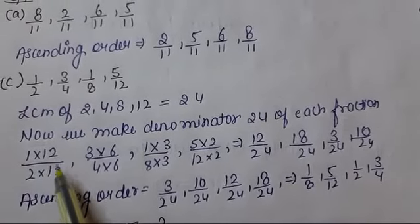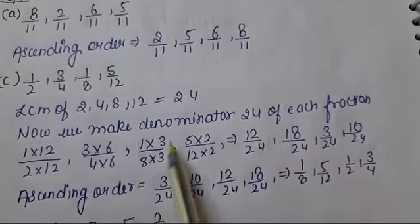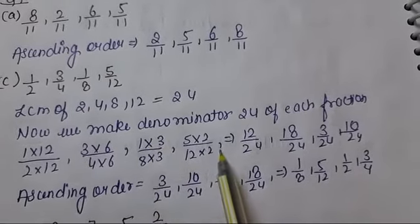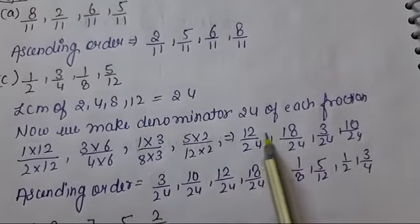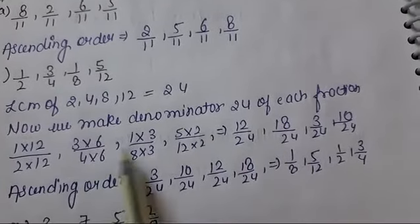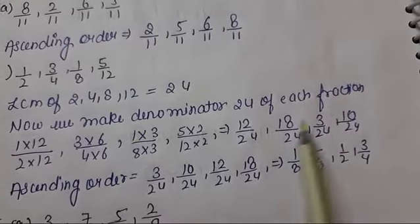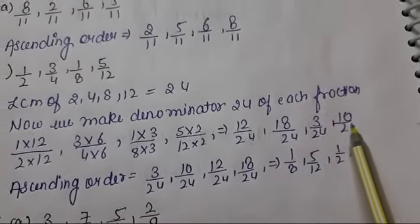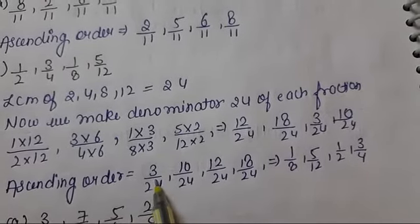For 1 upon 2, multiply by 12, so 1 also multiplies by 12. For 4, multiply by 6, so 3 also multiplies by 6. For 8, multiply by 3, so 1 also multiplies by 3. For 12, multiply by 2, so 5 multiplies by 2. This gives us 12 upon 24, 18 upon 24, 3 upon 24, and 10 upon 24.